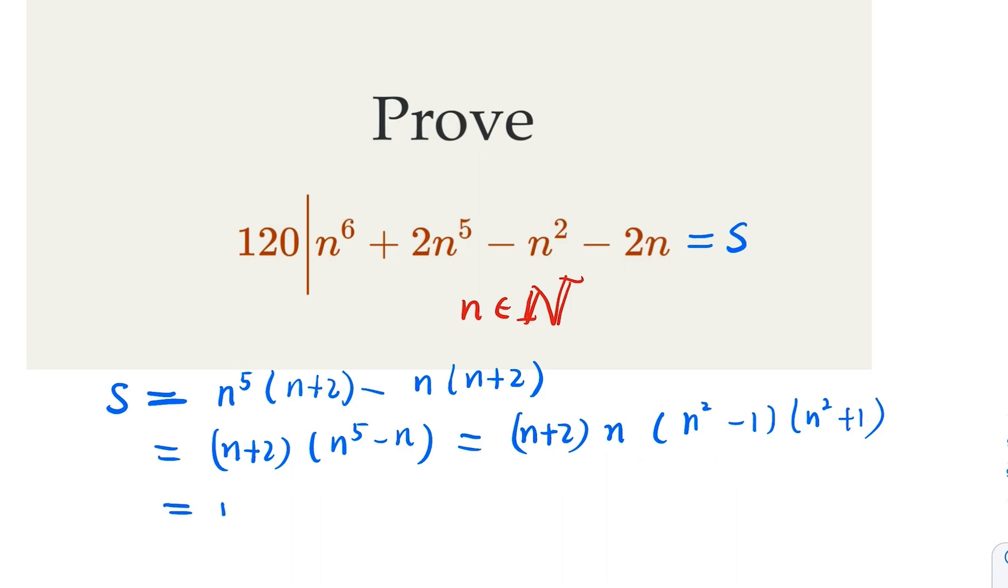Now n squared minus 1 can be further factored, n minus 1 and n plus 1. So let's write it here. So it's going to be n minus 1 times n times n plus 1 times n plus 2, and then you have term n squared plus 1.